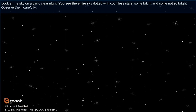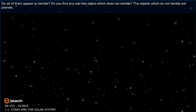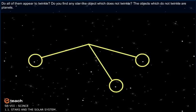Look at the sky on a dark, clear night. You see the entire sky dotted with countless stars, some bright and some not so bright. Observe them carefully. Do all of them appear to twinkle? Do you find any star-like object which does not twinkle? The objects which do not twinkle are planets.